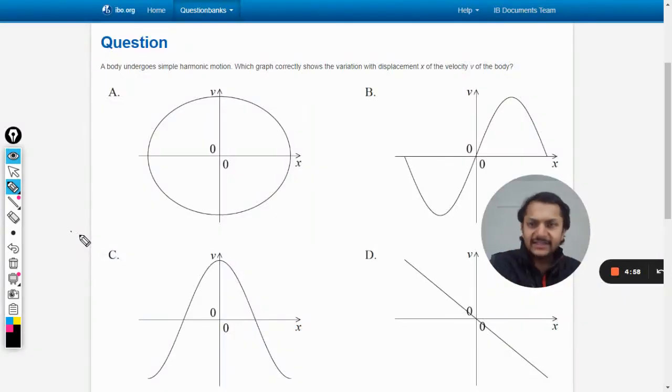Okay dear students, let us see what is in this question. A body undergoes simple harmonic motion. Which graph correctly shows the variation with displacement X of the velocity V of the body? The variation of velocity V with respect to displacement X - I have never seen this graph in any of the books.